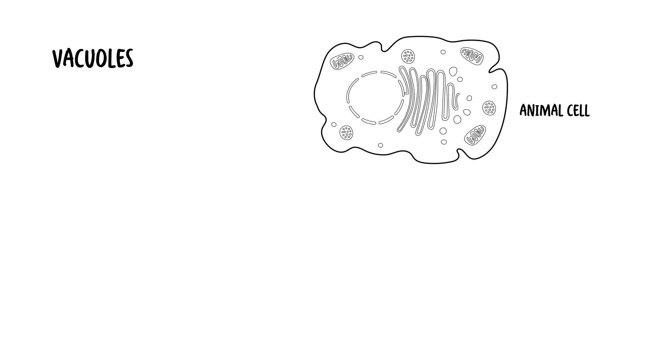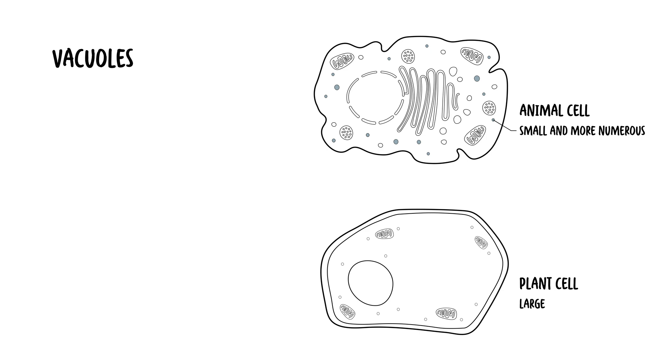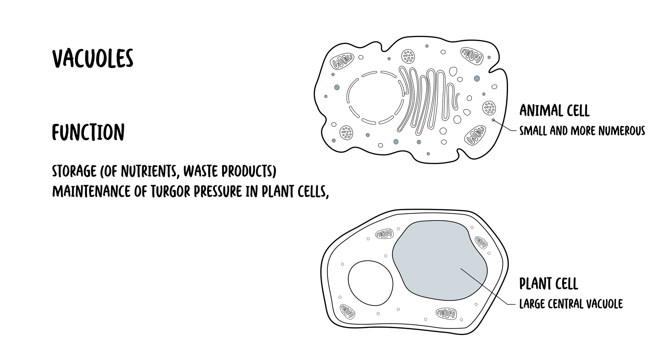The final organelle, mostly important in plants, are the vacuoles. Vacuoles are membrane-bound sacs within the cytoplasm. In animal cells, vacuoles are generally small and more numerous, whereas plant cells typically have a large central vacuole. Vacuoles are involved in storage of nutrients and waste products, maintenance of turgor pressure in plant cells, and intracellular digestion. They also play a role in isolating harmful material.